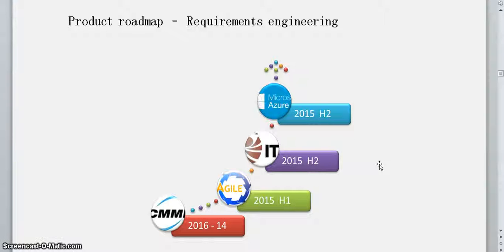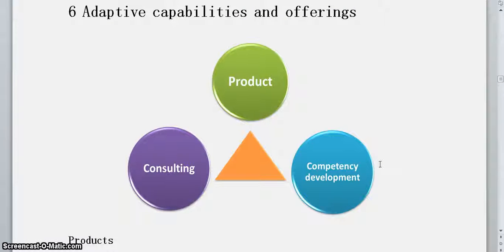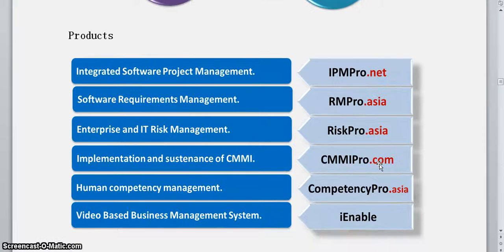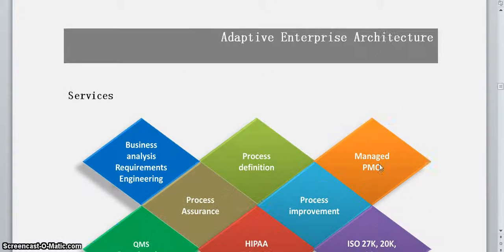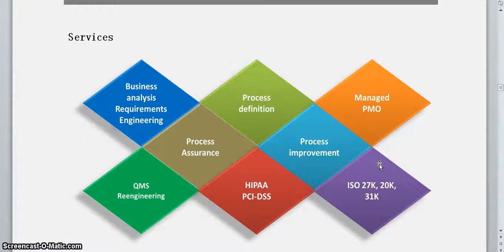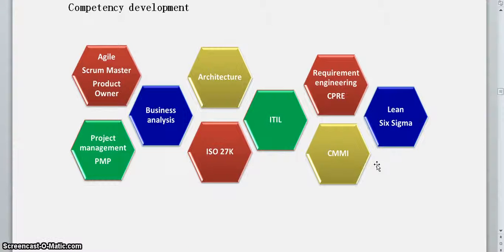Then we come to our capabilities and offerings. We have three main lines: product, consulting, and competency development. Under products, we have project management, requirements management, IT risk management, CMMI implementation services, competency management, and a video-based business management system. Under services, we offer business analysis, process definition, process improvement, managed PMO, ISO 27000, and more. Under competency development, we work in business analysis, Agile, project management, requirements engineering, CMMI, and related modules.